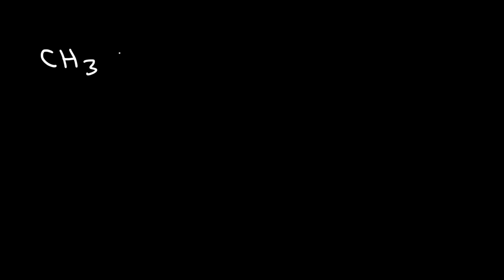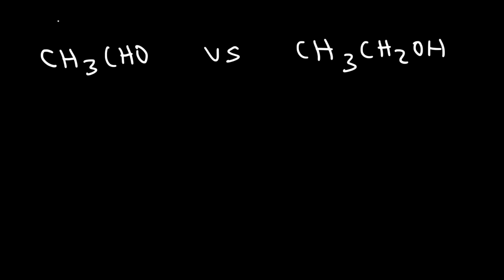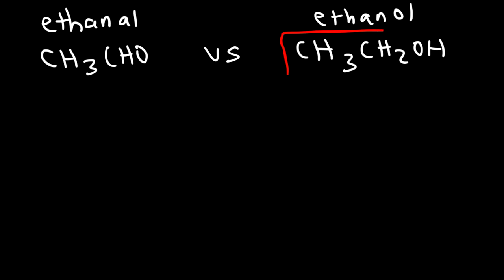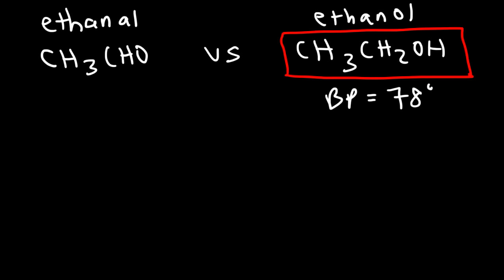Now let's compare acetaldehyde with ethanol. Acetaldehyde is also called ethanal, and on the right we have ethanol. Which of these two molecules will have a higher boiling point? It turns out that ethanol has a higher boiling point than acetaldehyde. The boiling point of ethanol is 78 degrees Celsius and for acetaldehyde we saw that it was 20 degrees Celsius. So why is it so much higher when both of these molecules are polar?